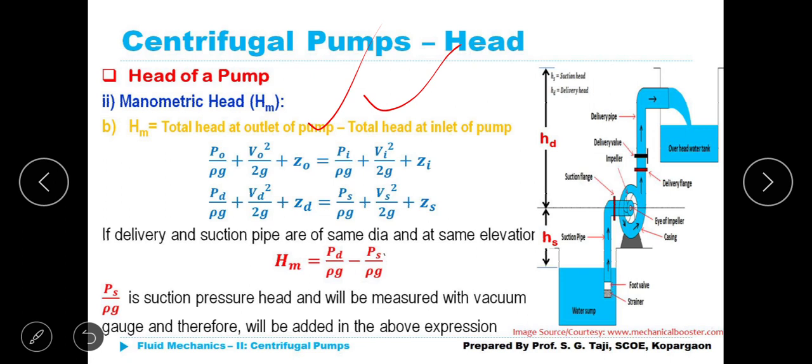If delivery and section pipe are of same diameter and at same elevation, HM is equal to PD upon rho G minus PS upon rho G. The rest of the things will automatically get cancelled away. So PS by rho G is suction pressure head and will be measured with vacuum gauge. It is provided just beside the primer and therefore will be added in the above expression.